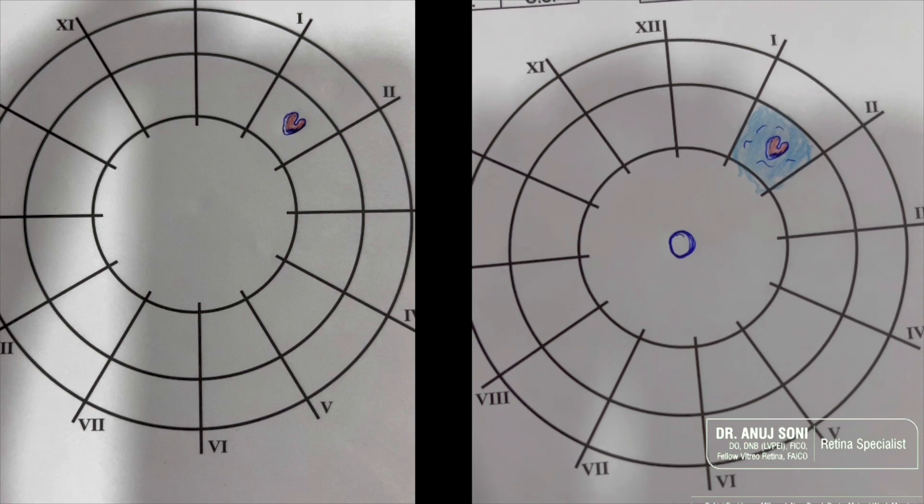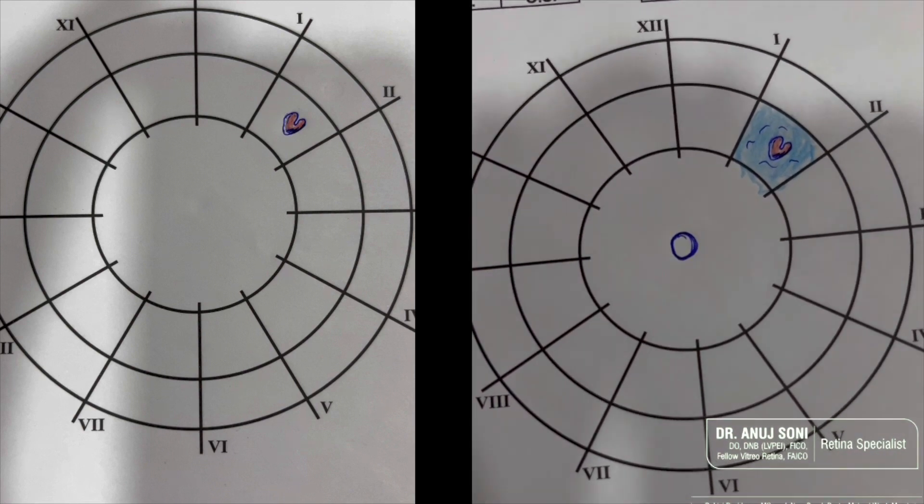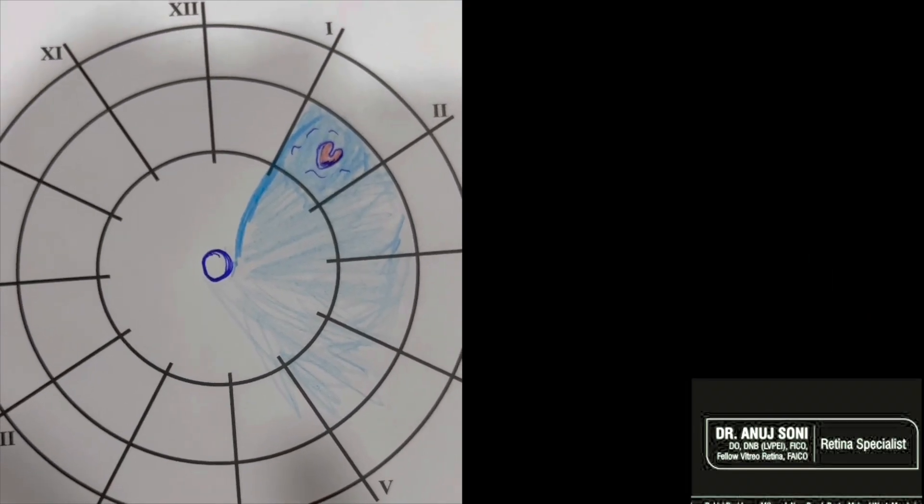Now imagine a case with a superior hole. The fluid is first noticed around the hole and then extends to the aura and then towards the disc. As fluid extends from aura to the disc, the detachment descends down and rises on the opposite side.